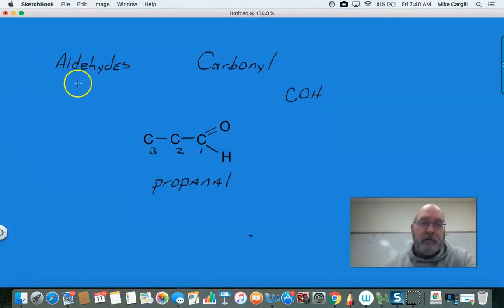So in aldehyde, we drop the E. We drop the E, and we add A-L. So this is propanal. So one, two, three, propanal. And we always start naming the parent chain from the carbonyl group on aldehyde.